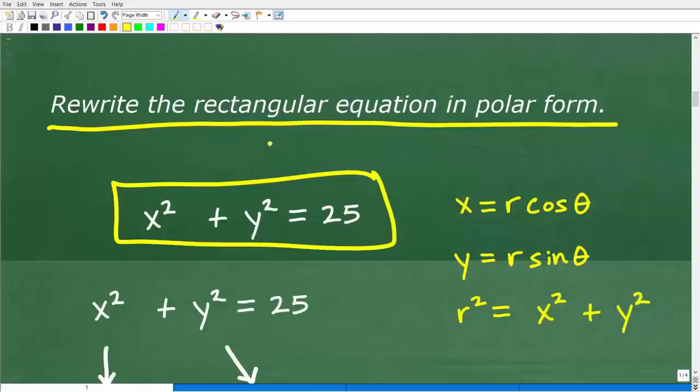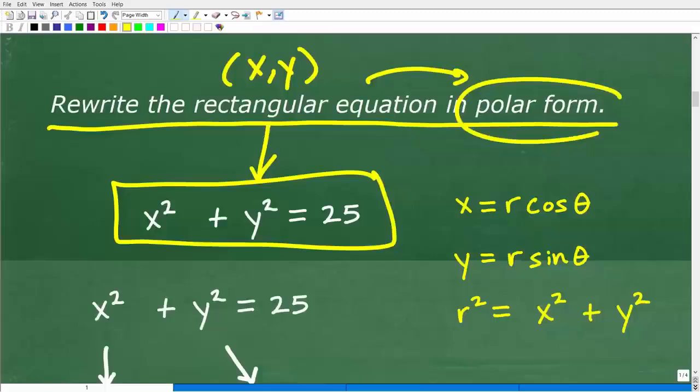This equation is in rectangular equation. In other words, again, the points, the way we would describe a point with this equation is an ordered pair x, y, and we want to rewrite it into polar form. So that's going to be r theta.